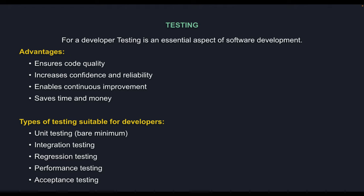For example, when requirements change and you need to change your code: proper test cases — not just written for code coverage — should cover actual business functionality. When you have proper unit test cases and you make changes, if all your test cases are passing, you don't need to worry about whether your changes are interfering with other pieces of code. That's where proper test cases give you confidence.